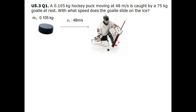We also know that the goalie has a mass of 75 kg. Let's give that the name mass 2, since this is a different object. We know that the goalie is at rest, which means that it has an initial velocity of 0 meters per second.